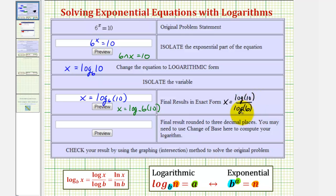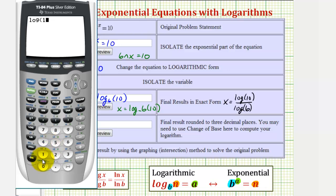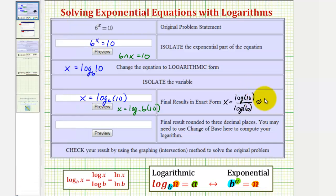So we would have x = log(10) / log(6). And now we'll go to the calculator, so we have common log 10 divided by common log 6. To three decimal places, x will be approximately 1.285.